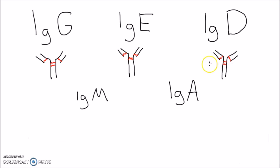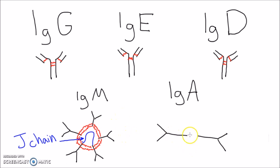IgM can exist as a pentamer linked together by disulfide bonds and a J-chain, or joining chain. IgA can exist as a dimer with a J-chain, as well as a secretory protein.